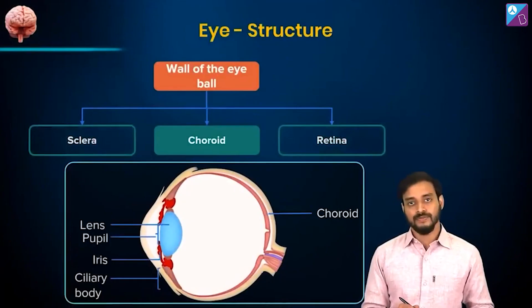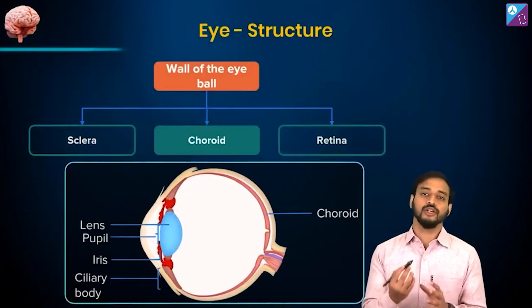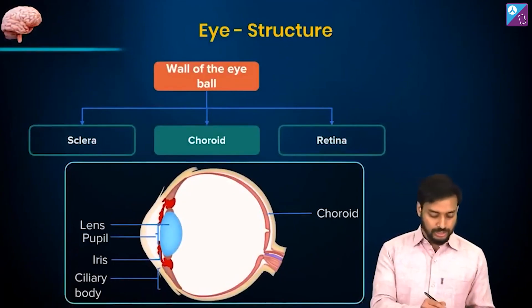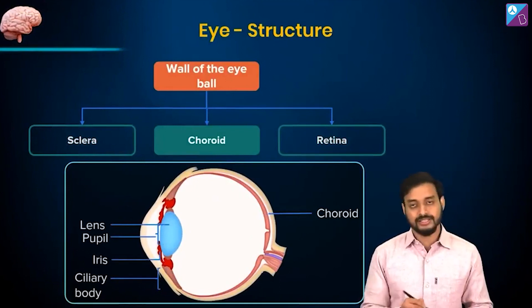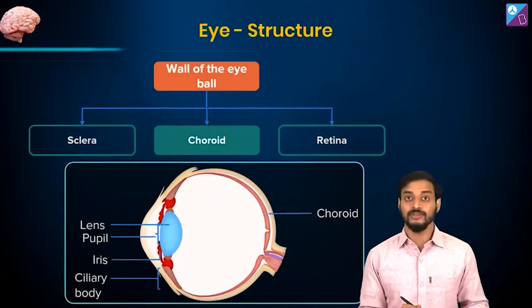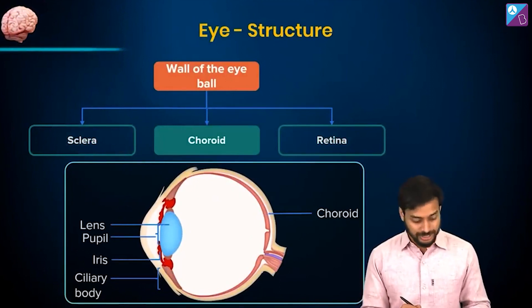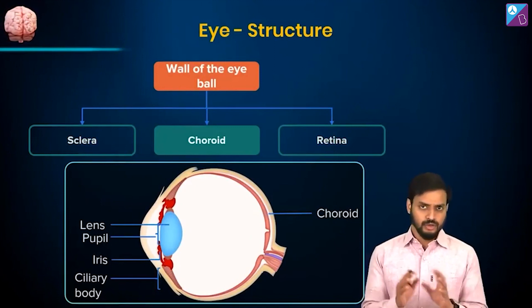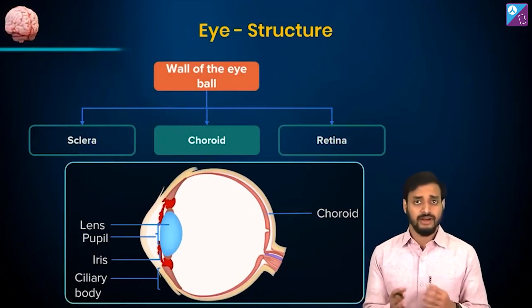The choroid. While we talk about the choroid, we are going to introduce ourselves to the terms: the lens, pupil, iris — you have heard about all these — and the ciliary body, which you may not have heard about.